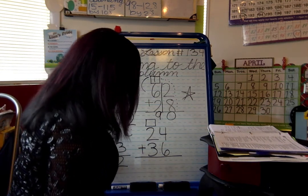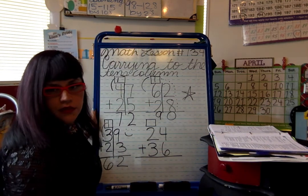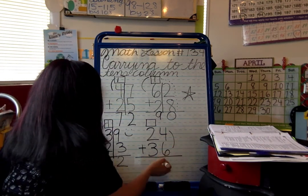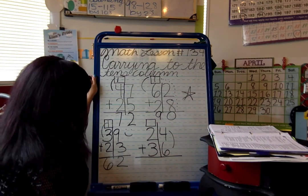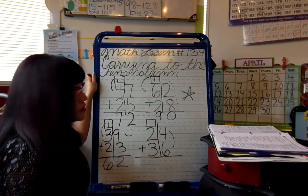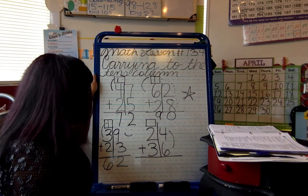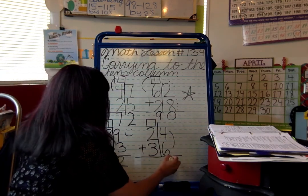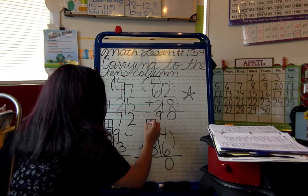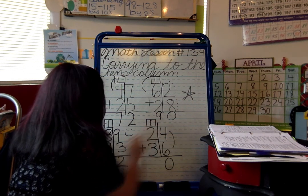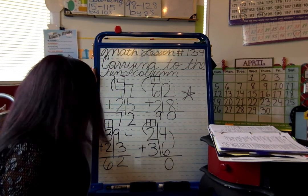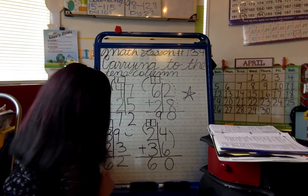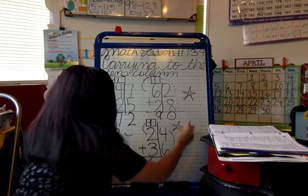Next problem: four plus six. Make your split. Four plus six is ten — you probably already know that. Put your zero down, bring your one, carry the one. Then one plus two is three, and three plus three is six. Give yourselves one, two stars — good job!